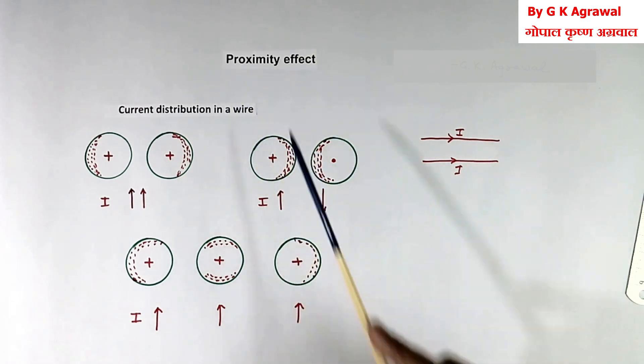This problem is there in SMPS transformer. Because in SMPS transformer, frequency of voltage and current is very high. So losses are more because of proximity effect.